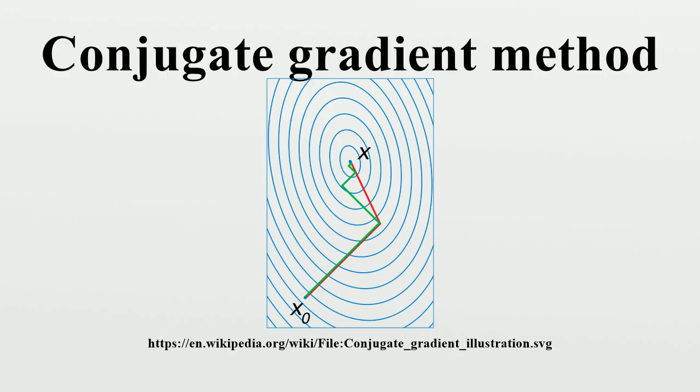Starting with our guess solution x_0, this means we take p_0 = b - Ax_0. The other vectors in the basis will be conjugate to the gradient, hence the name conjugate gradient method.